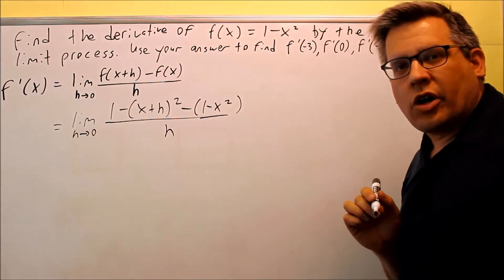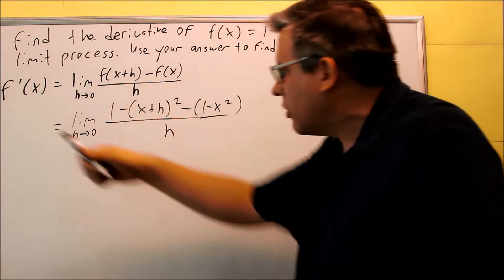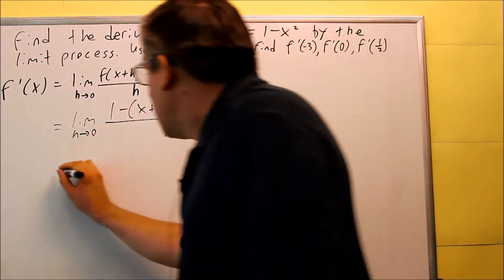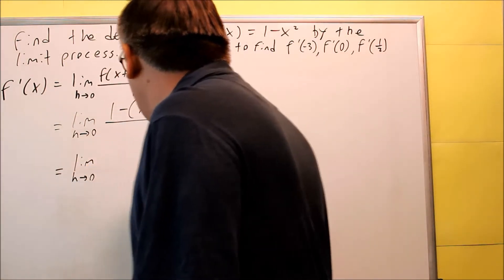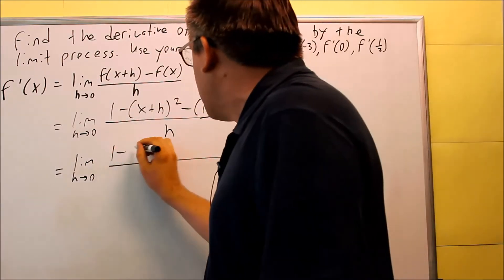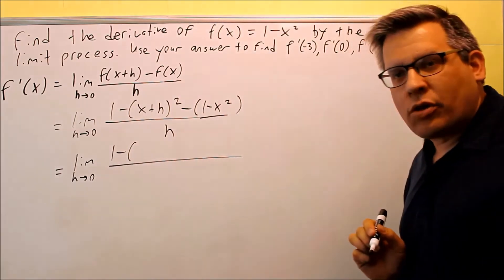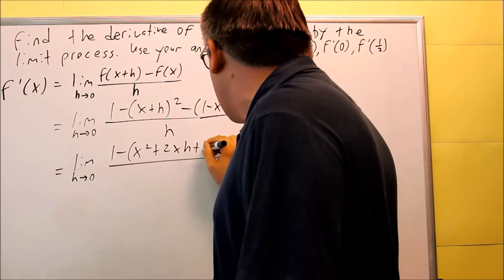This is the same process you would have done in pre-calc when you're finding the difference quotient. It's just that now we're adding the limit part on it. We're going to continue this. We're going to expand the part inside of here, so I'm going to do 1 minus, this all has to be inside parentheses,